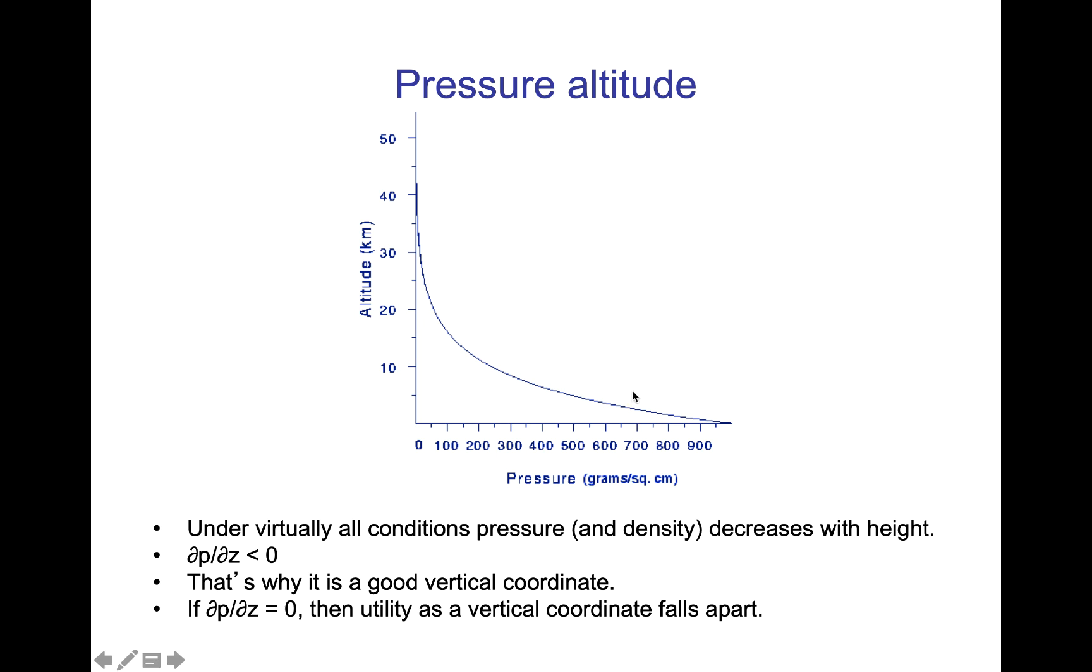This is simply a figure of pressure versus altitude. What you see here is a very strong relationship. And in fact, this is an exponential relationship. It will do you well to remember that this is an exponential relationship because as we develop the equations and as we move forward, we will often be using logarithms. And logarithms are the inverse function of the exponential. Under virtually all conditions, pressure and density decrease with height. dp dz is less than 0. That means if you want to think about it just in terms of signs, a delta in p will be a negative delta in z.